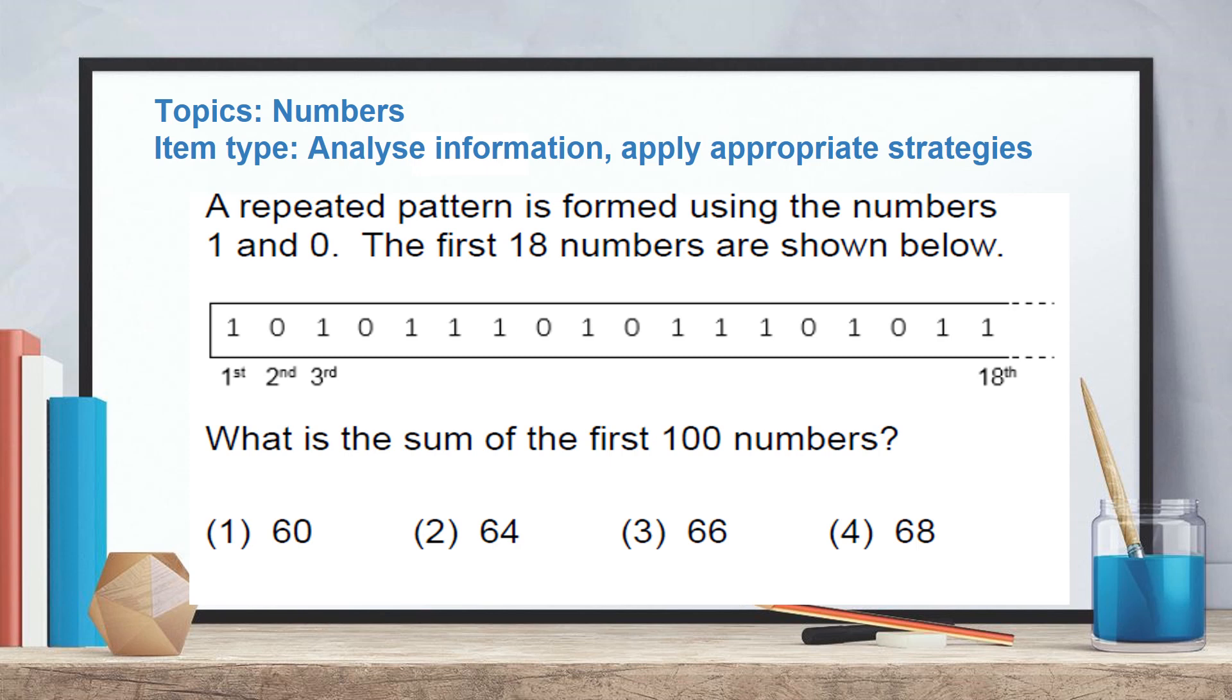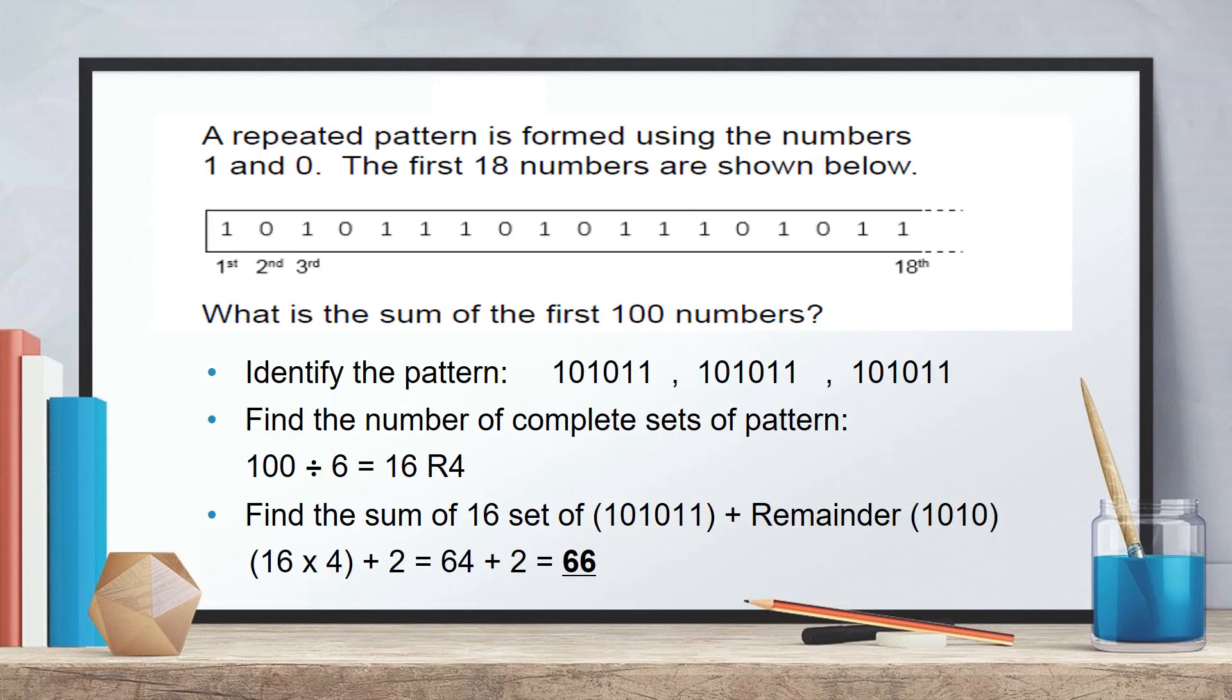Now, this is a question again on numbers, number pattern. But the students are expected to analyze information and apply appropriate strategies. A repeated pattern is formed using the numbers 1 and 0. The first 18 numbers are shown below. What is the sum of the first 100 numbers? So the students need to analyze this number pattern. And they need to identify the repeated pattern, which is 1 0 1 0 1 1. They need to test that this pattern is repeated.